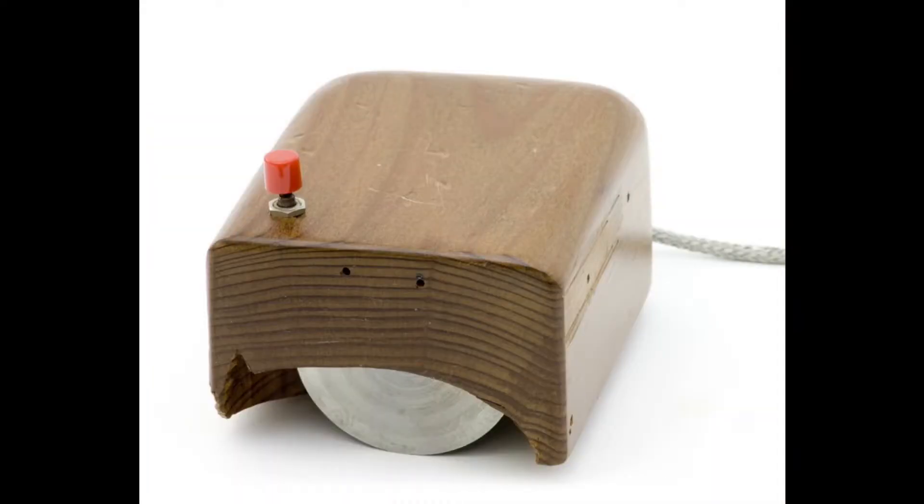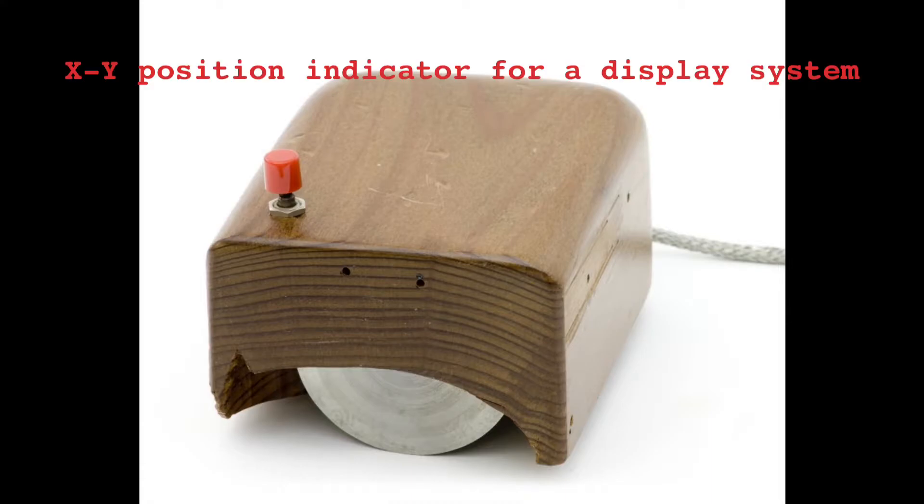The computer mouse was installed in the early 1960s at Stanford Research Institute. The first prototype was built in 1964. The patent application for this XY position indicator for a display system was filed in 1967.